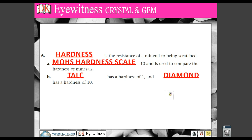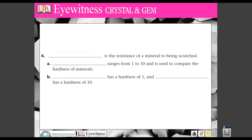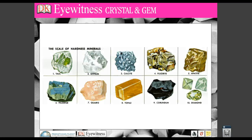The Mohs hardness scale goes from 1 to 10. It's a really good idea if you memorize all 10 of these in order. 1 is talc, 2 is gypsum, 3 is calcite, 4 is fluorite, 5 is apatite, 6 is feldspar, 7 is quartz, 8 is topaz, 9 is corundum, and 10 is diamond. For every number that's above another, it can scratch what's below it.